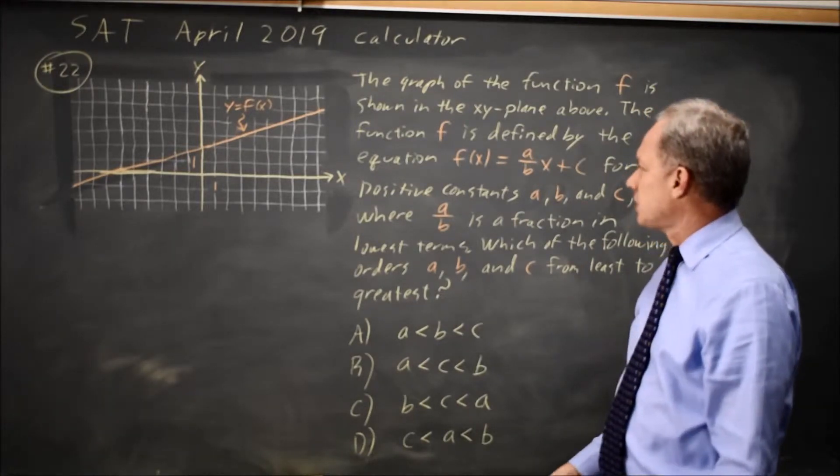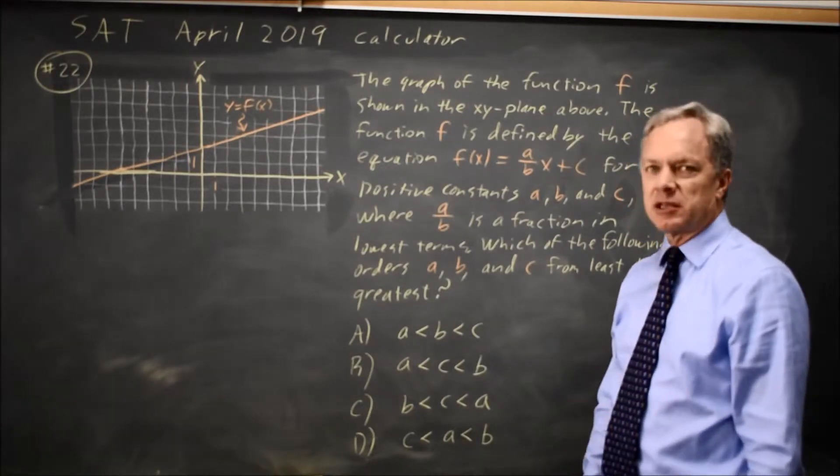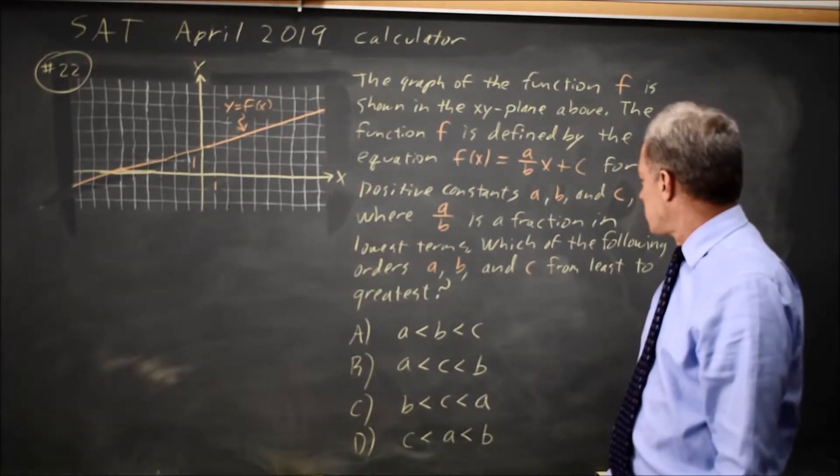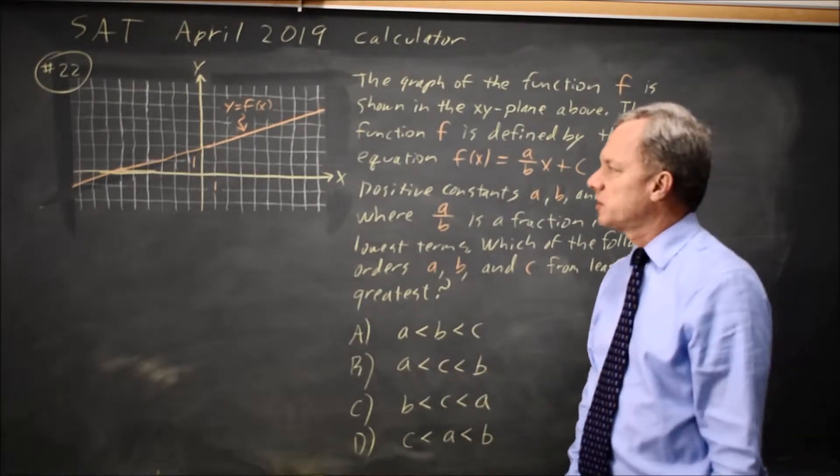is the equation of this line where a, b, and c are positive constants and a/b is a fraction in lowest terms, what is the order of a, b, and c from least to greatest?